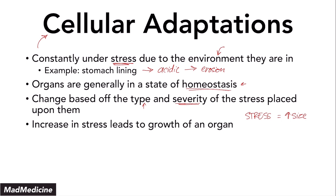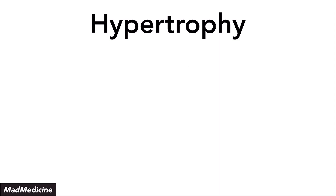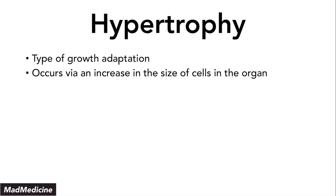There are mainly two types of growth adaptations you need to be well-versed in: hypertrophy and hyperplasia. We're going to talk about hypertrophy first, then hyperplasia, and then do a quick wrap-up. Hypertrophy is a type of growth adaptation that occurs when you increase the size of the cell. That is very important — hypertrophy has to do with size. We're going to differentiate hypertrophy from hyperplasia in a little bit. If this cell goes through hypertrophy, it is going to grow in size.